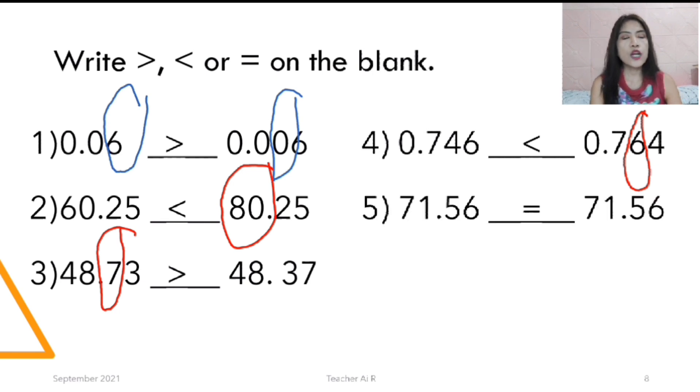Next, we also have number 5. We're going to compare the whole number. The whole number is the same, 71. And the 10th is the same as 5. And the 100th is the same as 5. So they are equal. Good job.